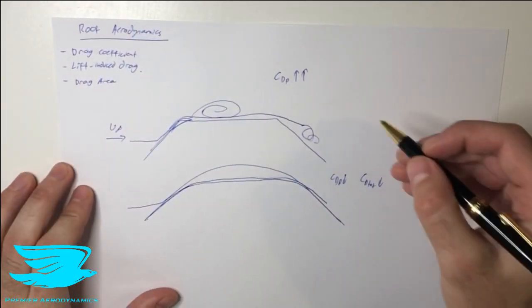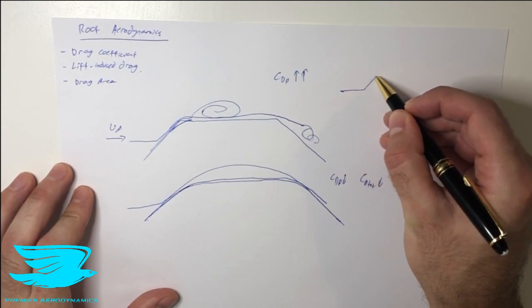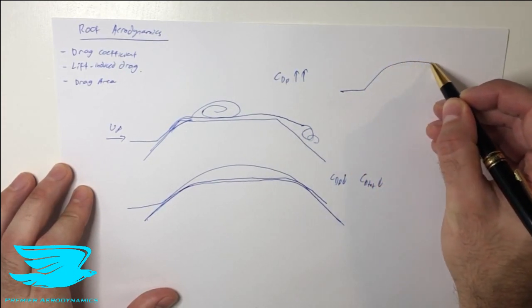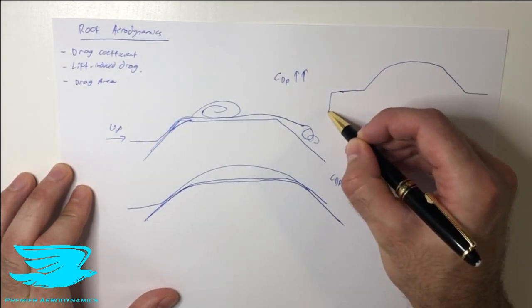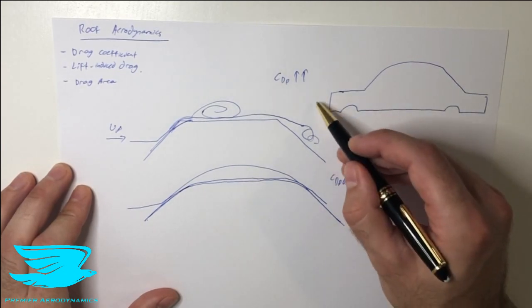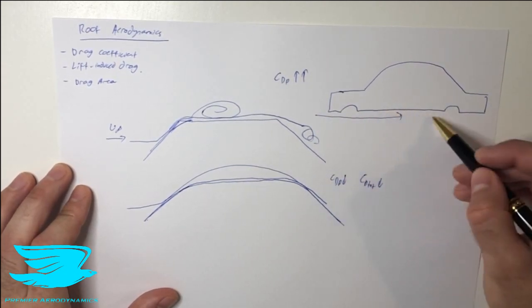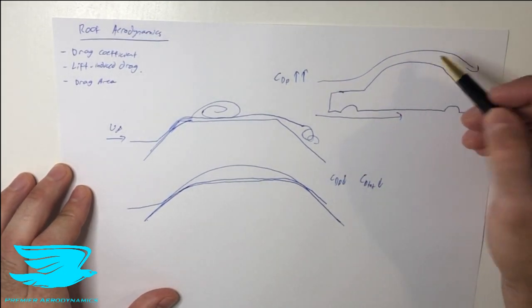So what happens is, if we have a car, I'm just going to draw quite an idealized car, and I'm going to round the roof a lot. And then we have the boot, then we have the front here, then the back, like this. We have flow coming underneath, and this surface is quite straight. Flow coming over the top, this surface is quite curved.